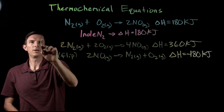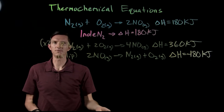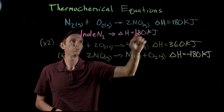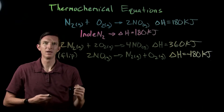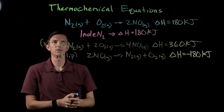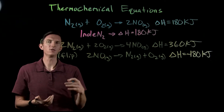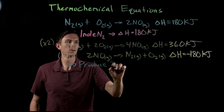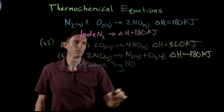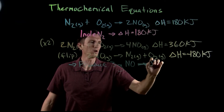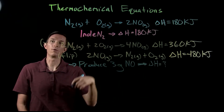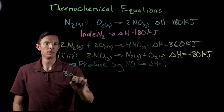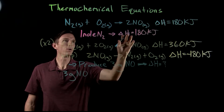We can also flip the sign when we reverse a reaction, or multiply enthalpy by the same factor we apply to the coefficients. Now, what happens in a real scenario where we work with a given mass? We don't usually talk about molar amounts directly — let's say we produce three grams of NO and want to figure out the enthalpy change, or the heat exchange, for this reaction.